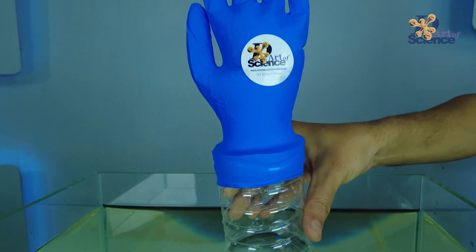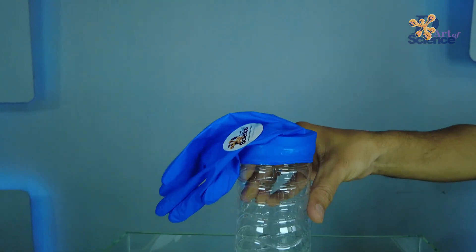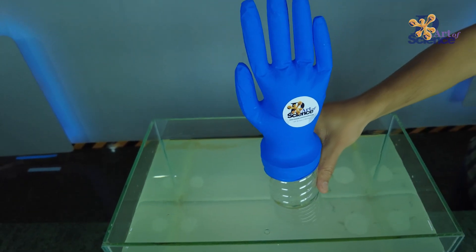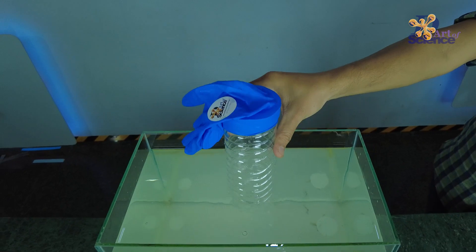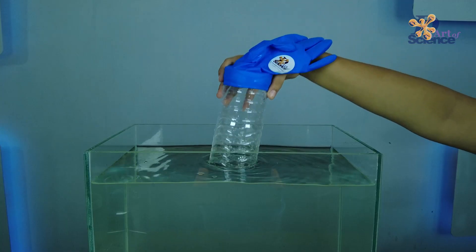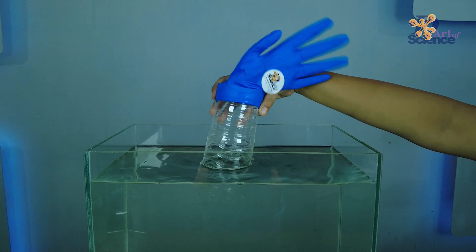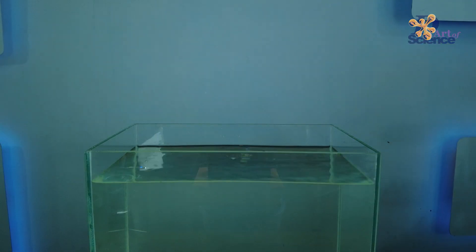Isn't this interesting? This video is part one of the series 'How to Show That Air Takes Space.' In the next part, we'll make a very interesting model that even you can try at home. If you have any doubts, let us know in the comments below and keep watching The Art of Science.